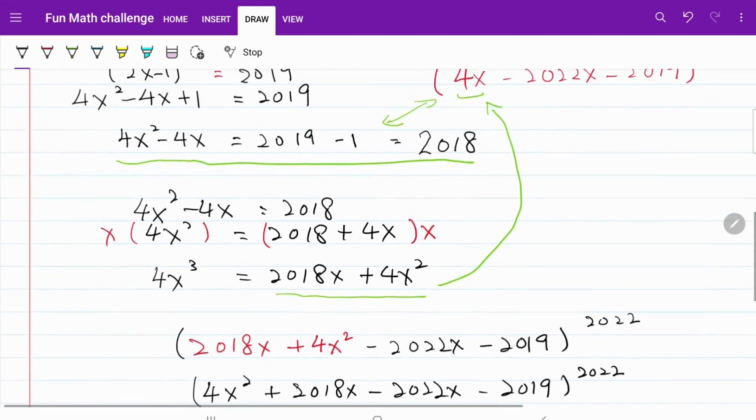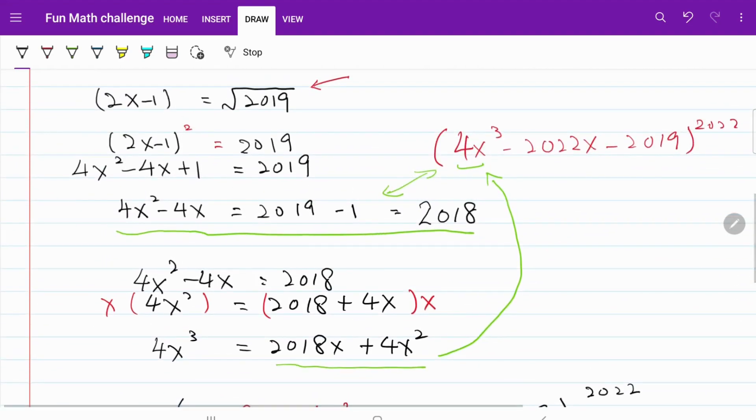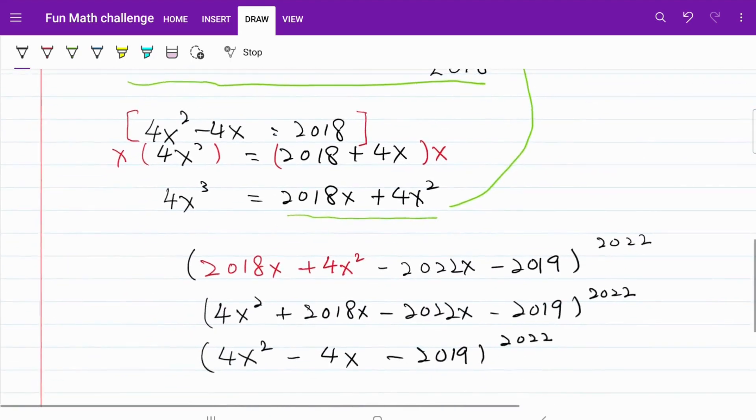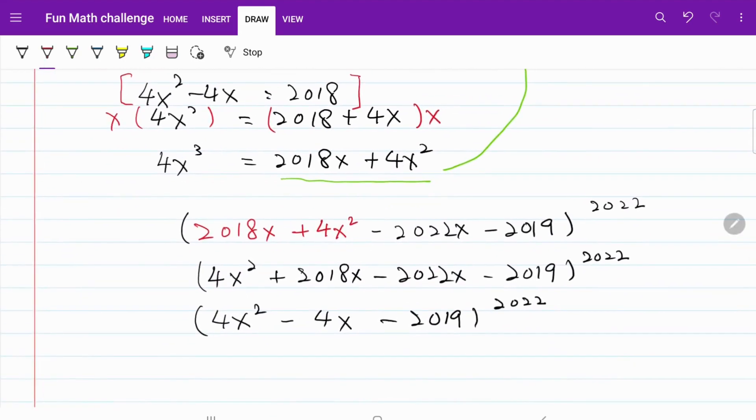If we refer back to what we previously have, 4x squared minus 4x is equivalent to 2018. We are going to go ahead and use that for our substitution. When I do the substitution, this part right here will become 2018 and minus 2019 raised to the power of 2022.